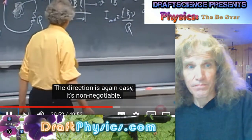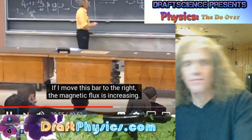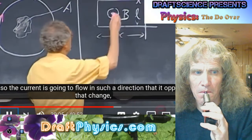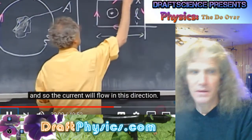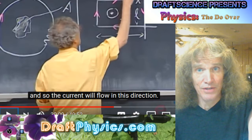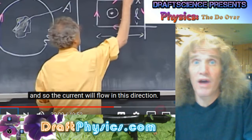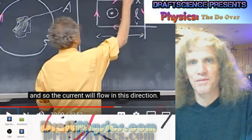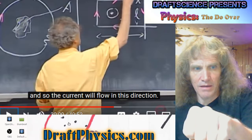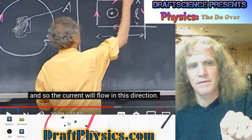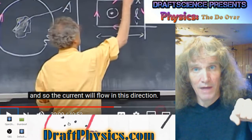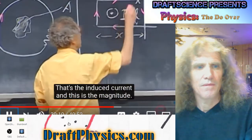The direction is again easy. It's non-negotiable. If I move this bar to the right, the magnetic flux is increasing. So the current will flow in this direction. And at this point, there's no opposition to anything. There's just either something getting pressurized or depressurized. It's not trying to be uncooperative in some way. It's not fighting something. It's just that you're creating this mirror effect. So when you're pushing the bar in, you're making more of a mirror. And when you're pulling the bar out, you're making less of a mirror.